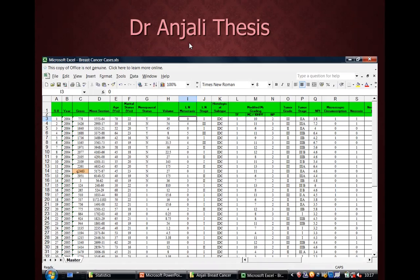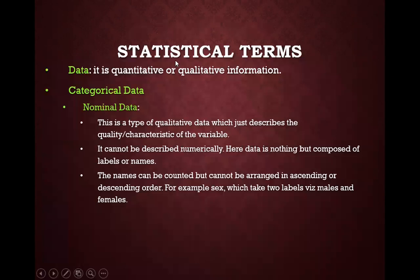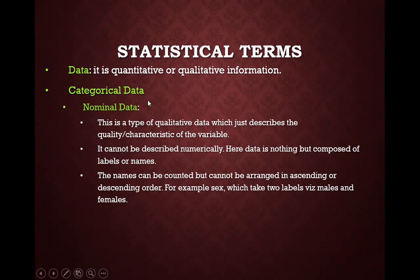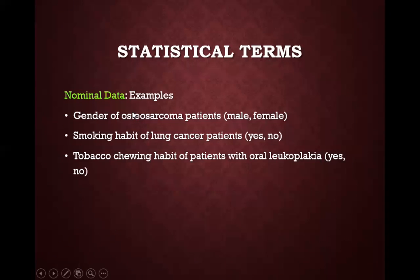Let us move on to each type of data. Data is quantitative or qualitative information. Qualitative information means categorical data, and categorical data are of two types: nominal data and ordinal data.